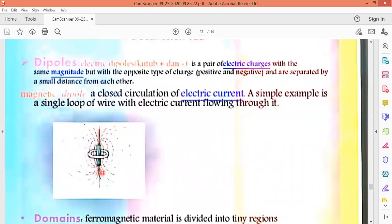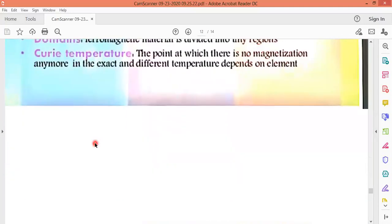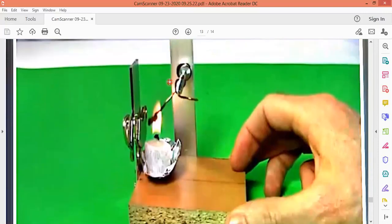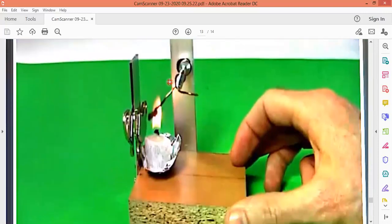Now in that way, dipoles - you can see dipoles. We know what happens. This is a pair of charges. The charge should be opposite, plus minus or minus plus, at a distance, and the charge's magnitude is the same. The whole arrangement forms the dipole. So, magnetic dipole is a closed circulation of electric current. A simple example is a single loop of wire with electric current flowing through it. This is the example.